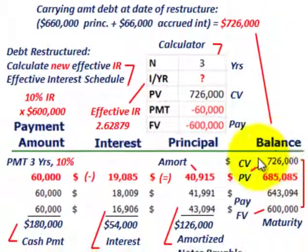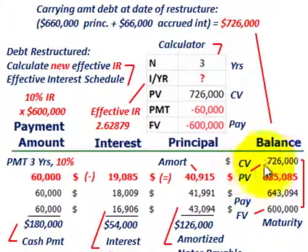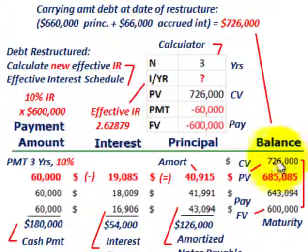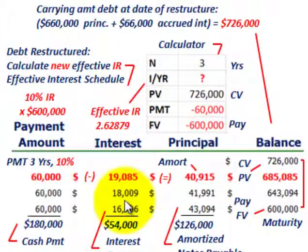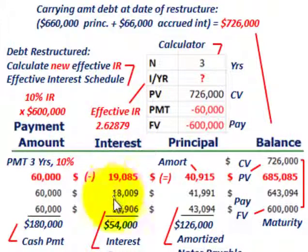Moving down to our amortization schedule, our beginning carrying value or present value on that note is $726,000 at the date of restructure. What we have to do is come up with a new amortization schedule, and this is where the new effective interest rate comes into play. We'll look at how we calculate that.